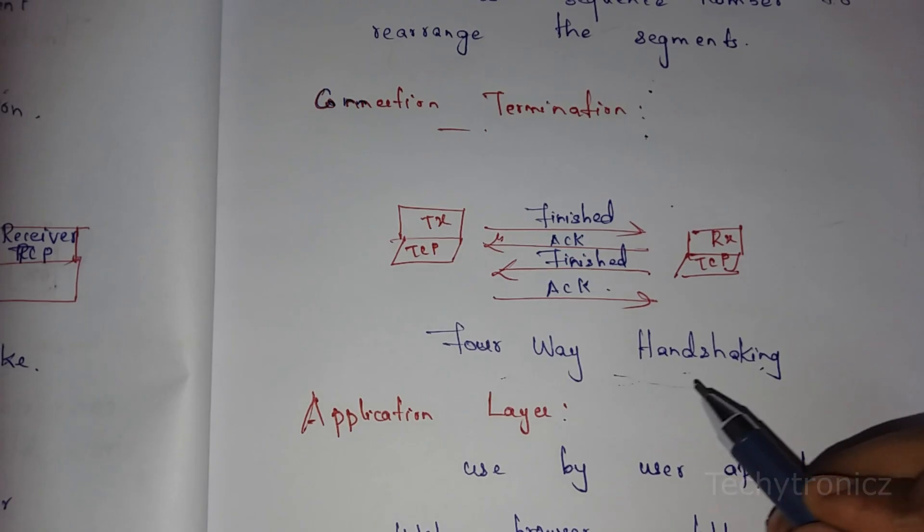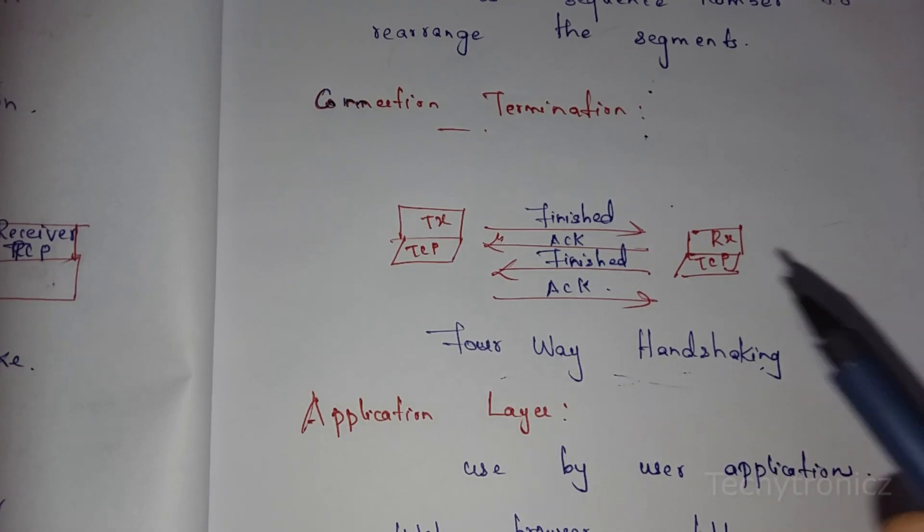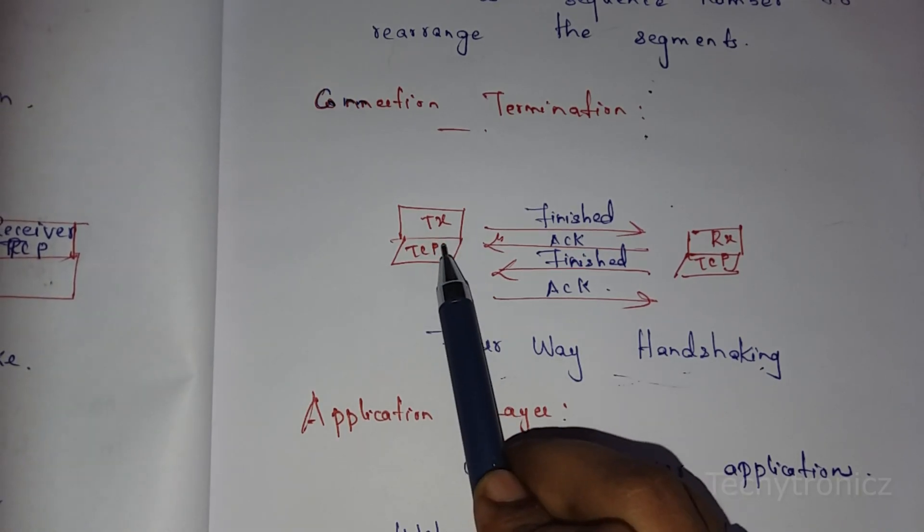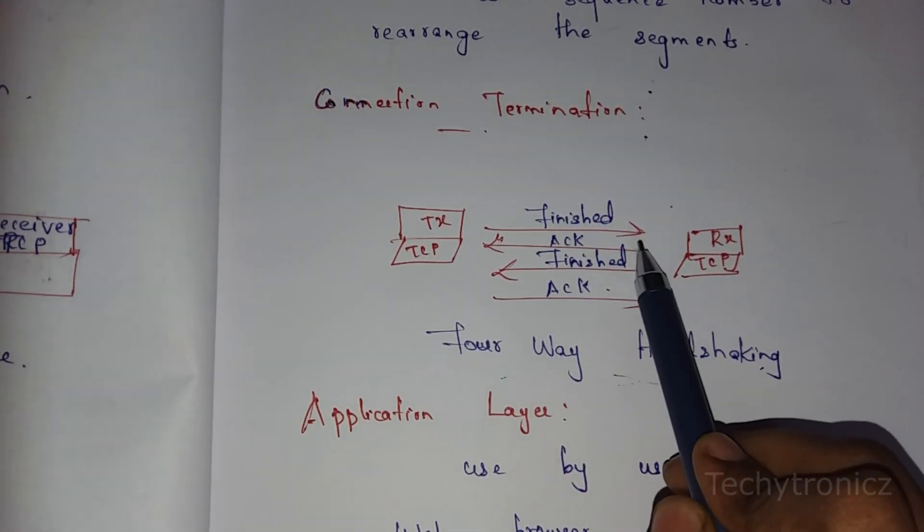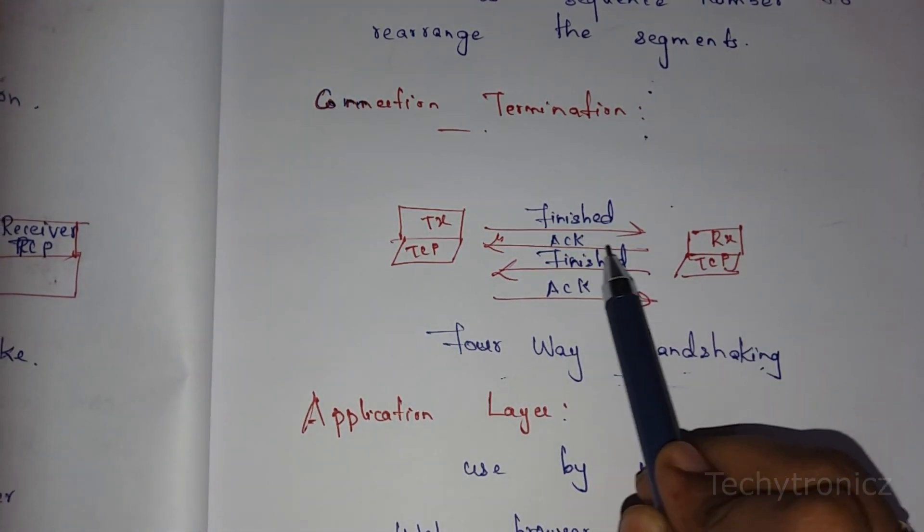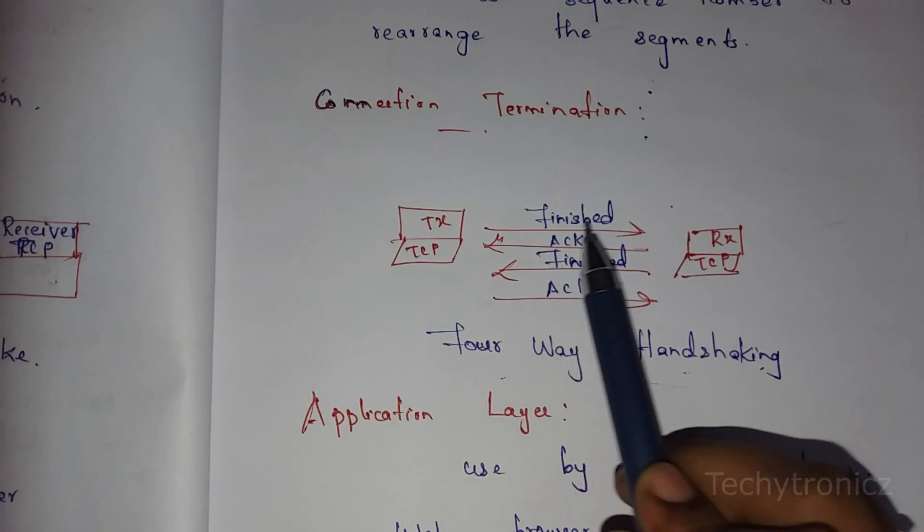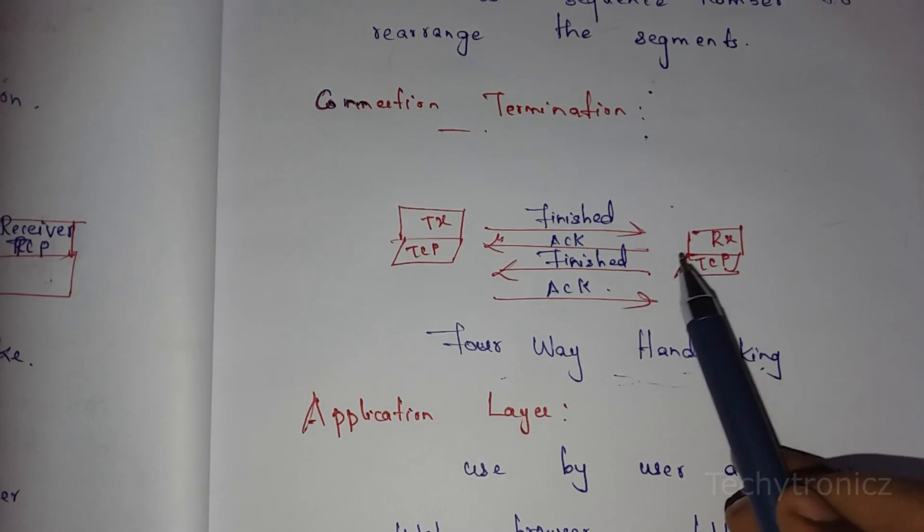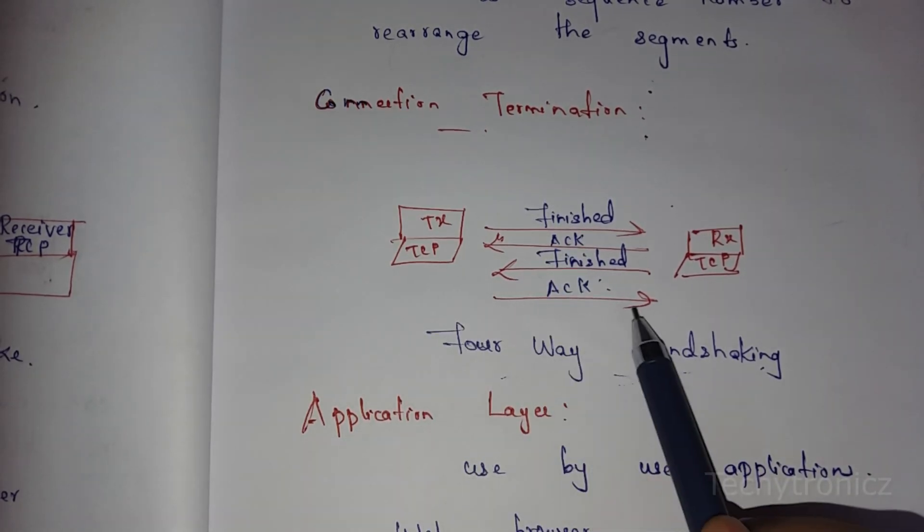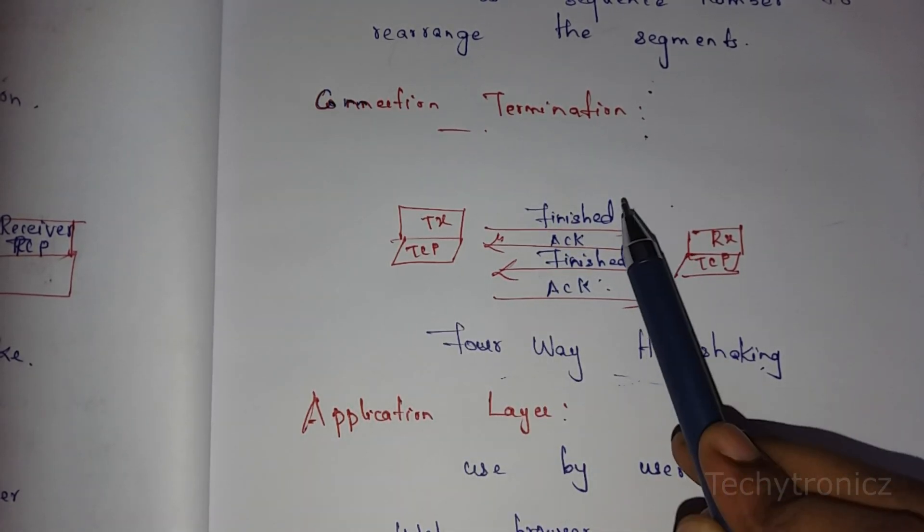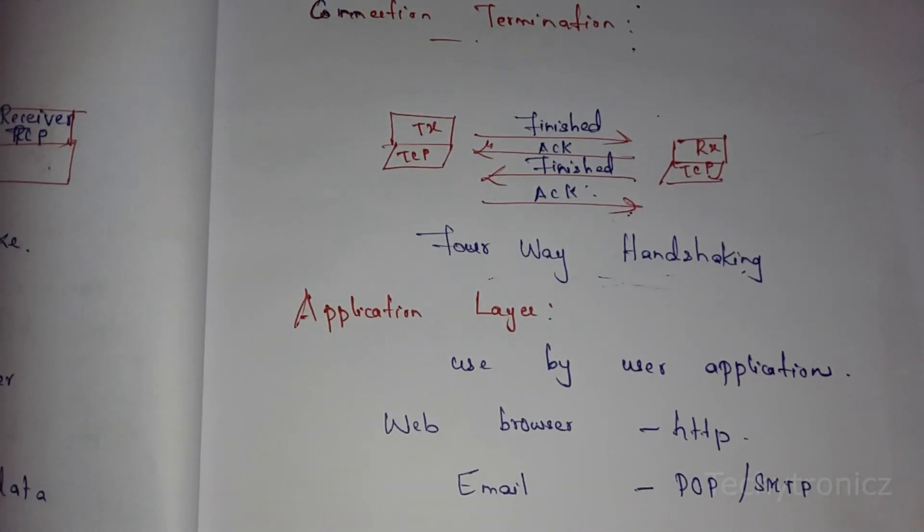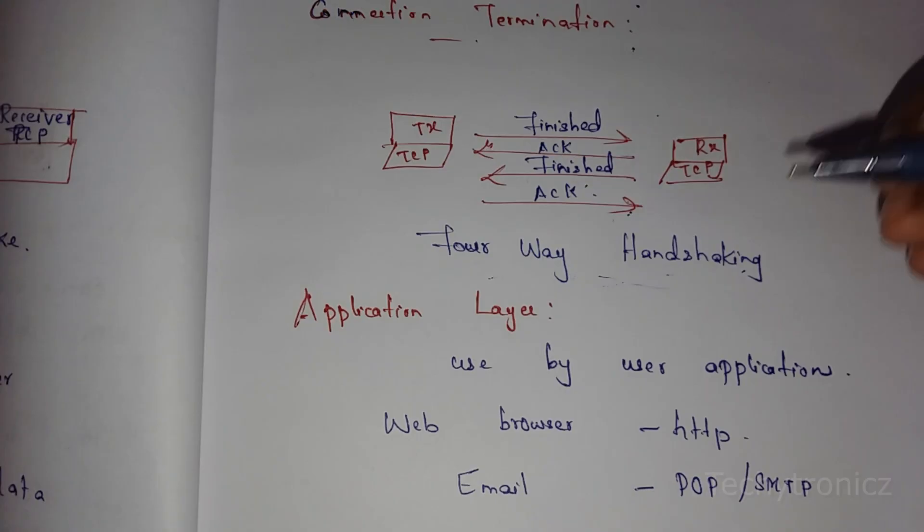Connection termination occurs after data transmission is complete, using a four-way handshaking method. This is an important topic - both three-way handshaking and four-way handshaking. For connection termination, the transmitter's TCP sends a finish message. The receiver sends an acknowledgement, and after receiving all data, sends a finish message. The transmitter then acknowledges this, completing the four communications.